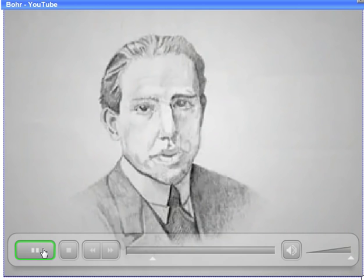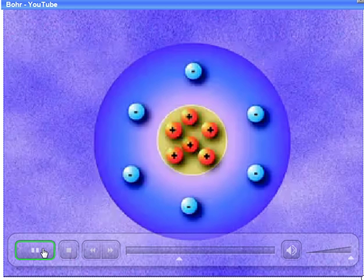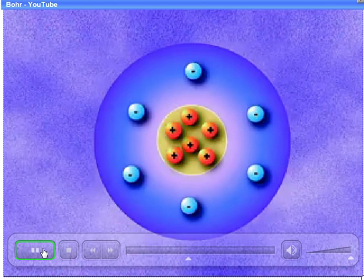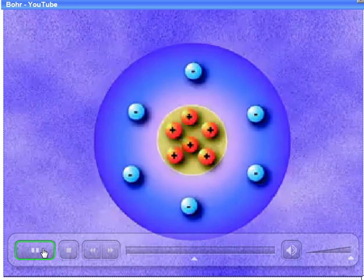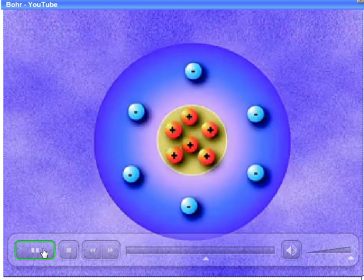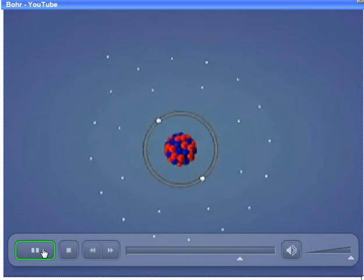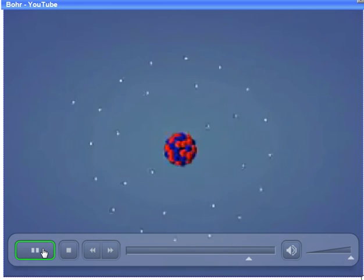In 1913, a Danish scientist by the name of Niels Bohr improved upon Rutherford's model of the atom. While Rutherford proposed that negatively charged electrons were held in orbit by the positively charged nucleus, he did not describe the location of the electrons. Niels Bohr proposed that electrons move in orbits around the nucleus, and he proposed that these orbital paths, or energy levels, are located at various distances from the nucleus.